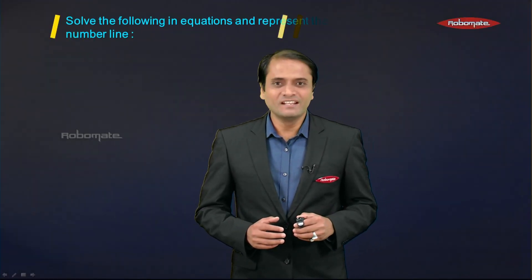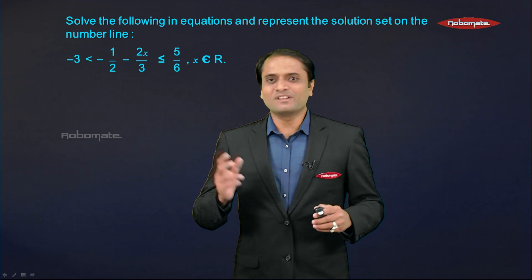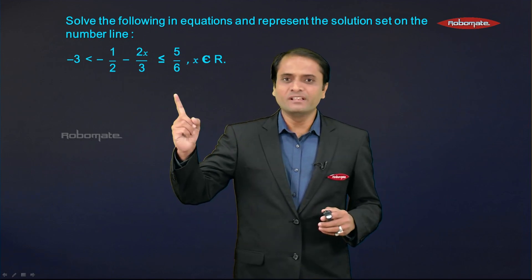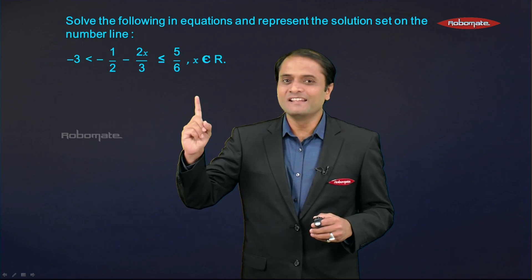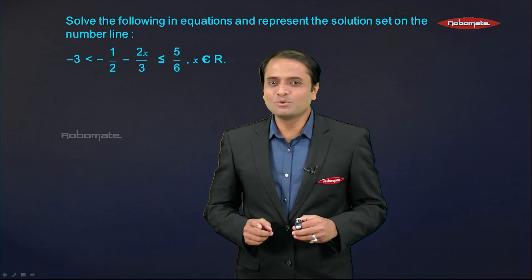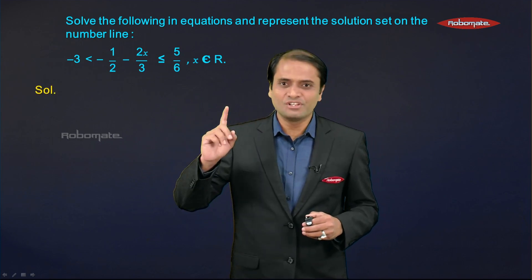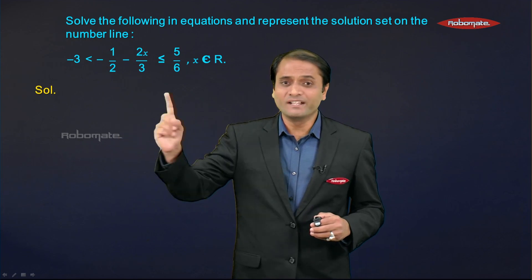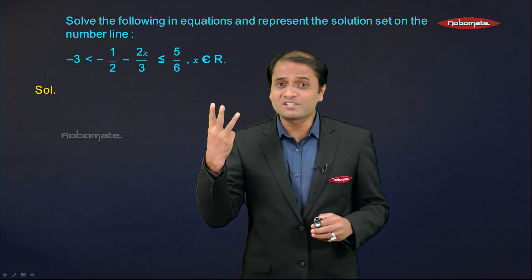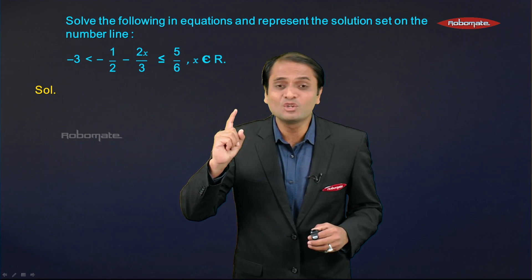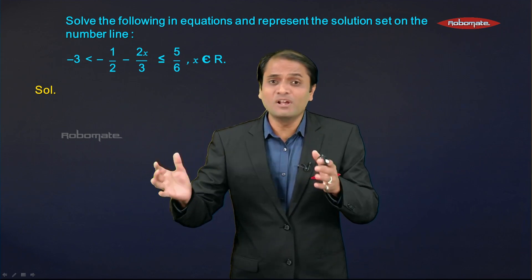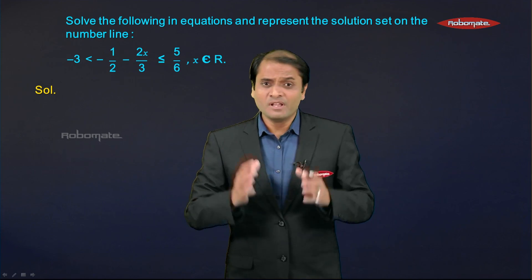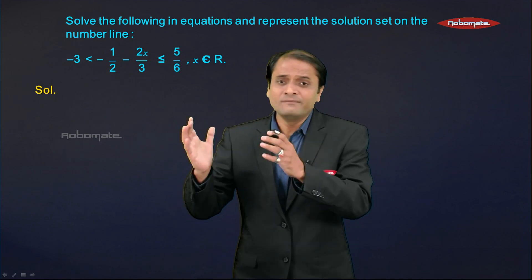Welcome back. Let's see the next question based on linear inequations. The question says: solve the following inequation and represent the solution set on the number line. If you observe this question, there are two inequality signs — three expressions connected by two inequality signs — which means this is a double linear inequation.